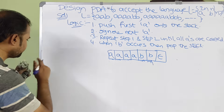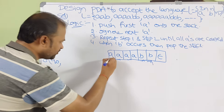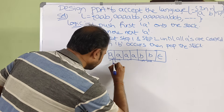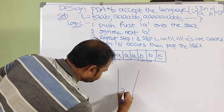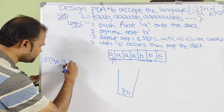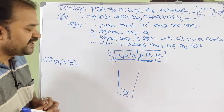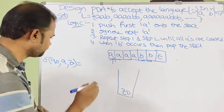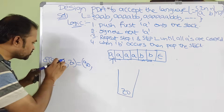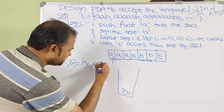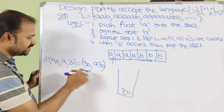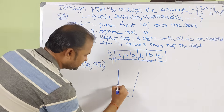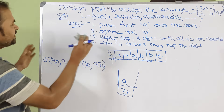The initial state is Q0. Delta of (Q0, A, Z₀): initially the read head is at A and the top of the stack is Z₀. We push A onto the stack, staying at Q0. So Z₀ is replaced by A, Z₀ — the stack content becomes A, Z₀.